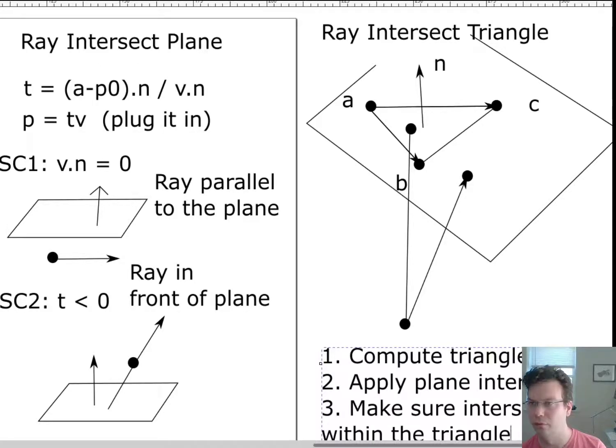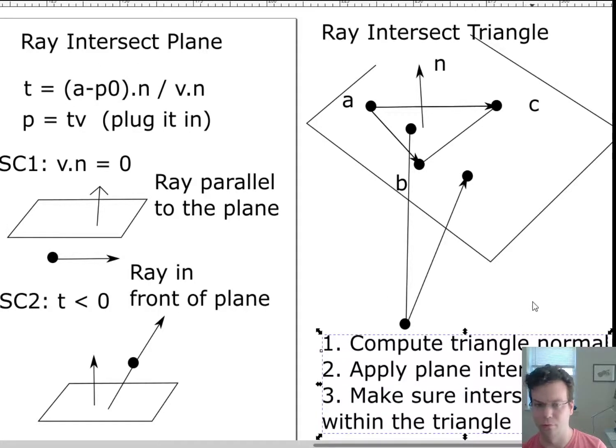You can do this just by using the barycentric coordinates. Look at the barycentric coordinates of this intersection point P. If they sum to one or less than one plus epsilon, then you're actually inside the triangle. If they don't, then you're outside the triangle.